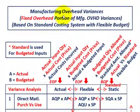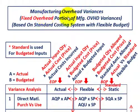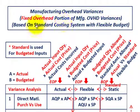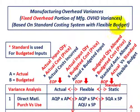What we're going to be going over here is manufacturing overhead variances, and we're going to be looking at the fixed overhead portion of our manufacturing overhead variances. This is going to be based on a standard costing system using a flexible budget.